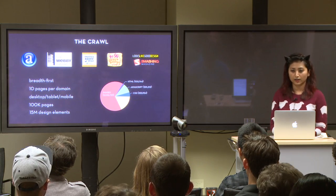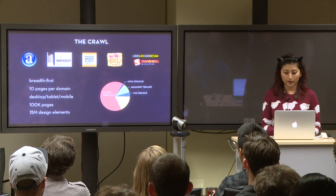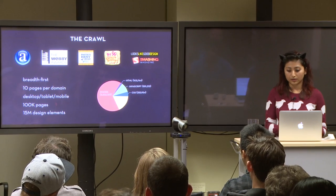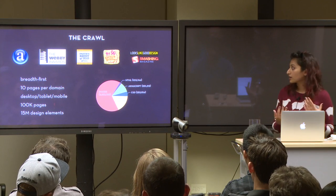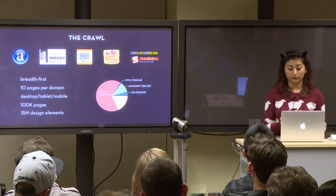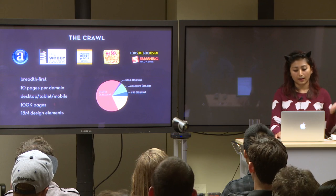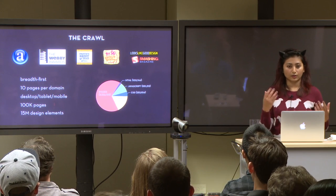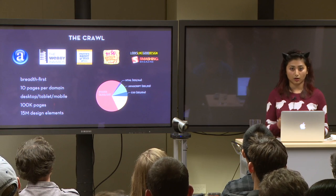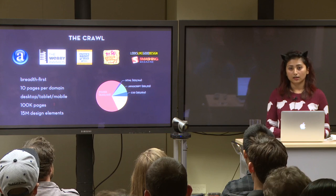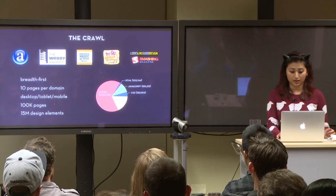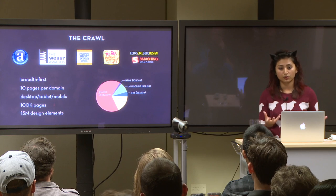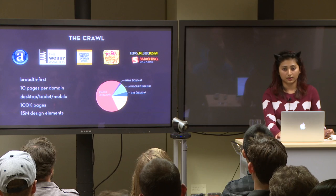The Web Zeitgeist crawl was seeded with pages from the Alexa Top 500, the Webby Awards Gallery, and other popular design blogs. We crawled pages in breadth-first order and limited downloads to 10 pages per domain to ensure a diverse repository. We also spoofed HTTP headers and requested both mobile and tablet versions of pages so we can understand how designs change across form factors. Currently, the Web Zeitgeist dataset consists of around 100,000 web pages, corresponding to about 150 million individual DOM nodes, or about 15 million visual design elements.